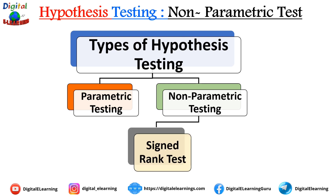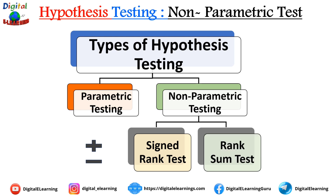Non-parametric tests are bifurcated into two types. One is the signed rank test, where the sign is indicated as plus or minus. The other is the rank sum test, where ranking is done as 1, 2, 3. The key difference is data dependency: the signed rank test is for paired data, while the rank sum test is for independent data.